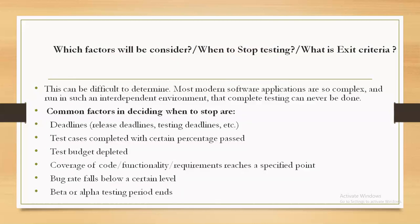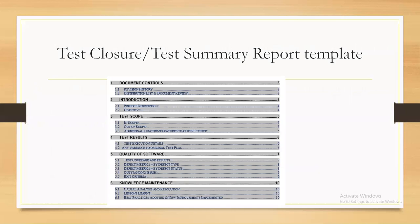What documents are produced at test closure time? There are two documents: the test closure report, also called the test summary report, and the test metrics. The components in the test summary report template include: document controls, revision history, distribution list, document review, introduction, project description, objective, and scope.